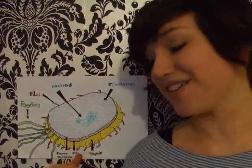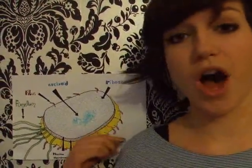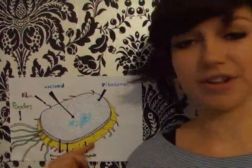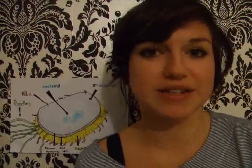And now onto the surface structure, starting on the outside and working our way in. All of the things mentioned before are contained within a capsule — kind of like a casing around a kinder egg. The capsule is made up of polysaccharides and sometimes proteins.